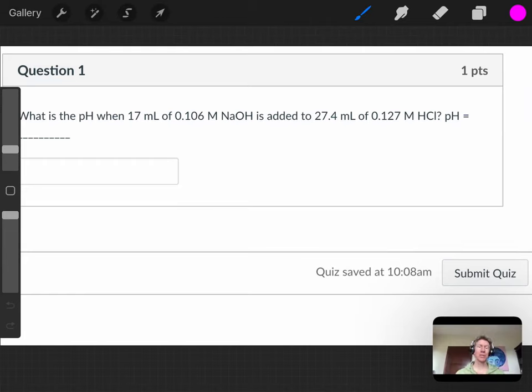It says, what is the pH when 17 milliliters of 0.106 molar sodium hydroxide, that's going to be a strong base, is added to 27.4 milliliters of 0.127 molar HCl. That's going to be a strong acid.